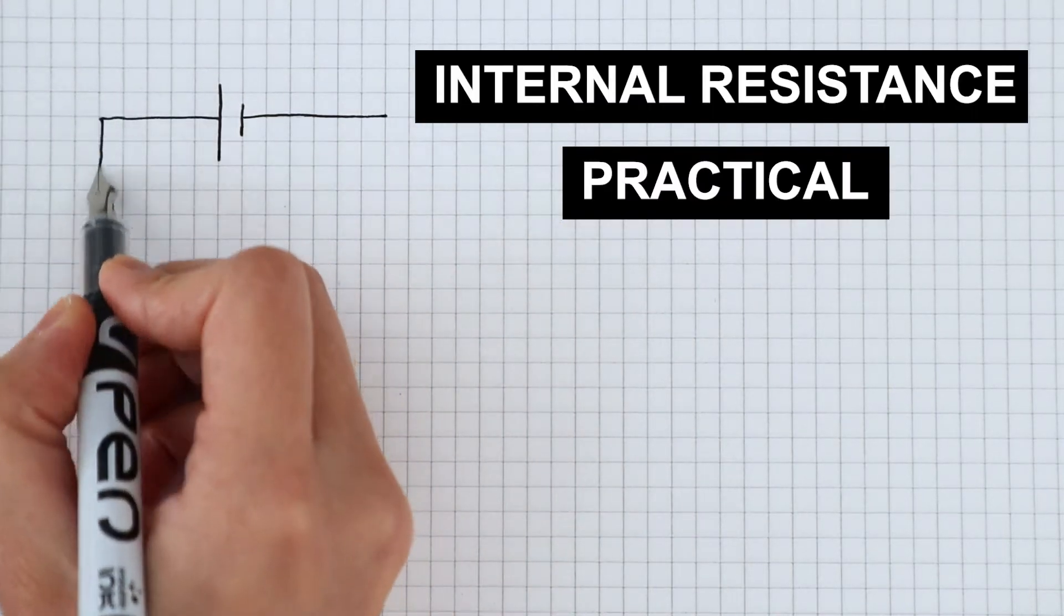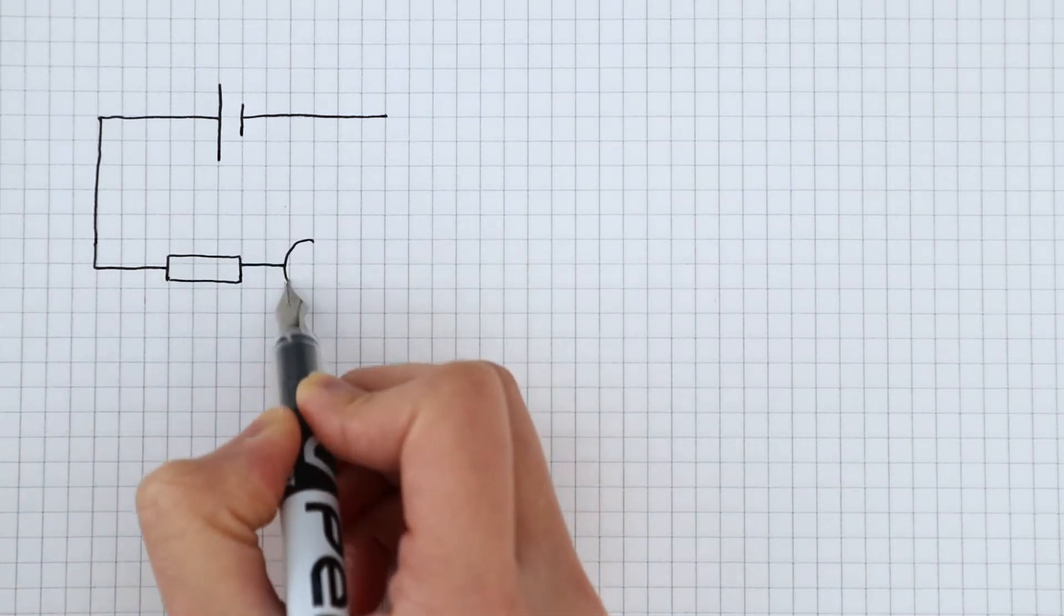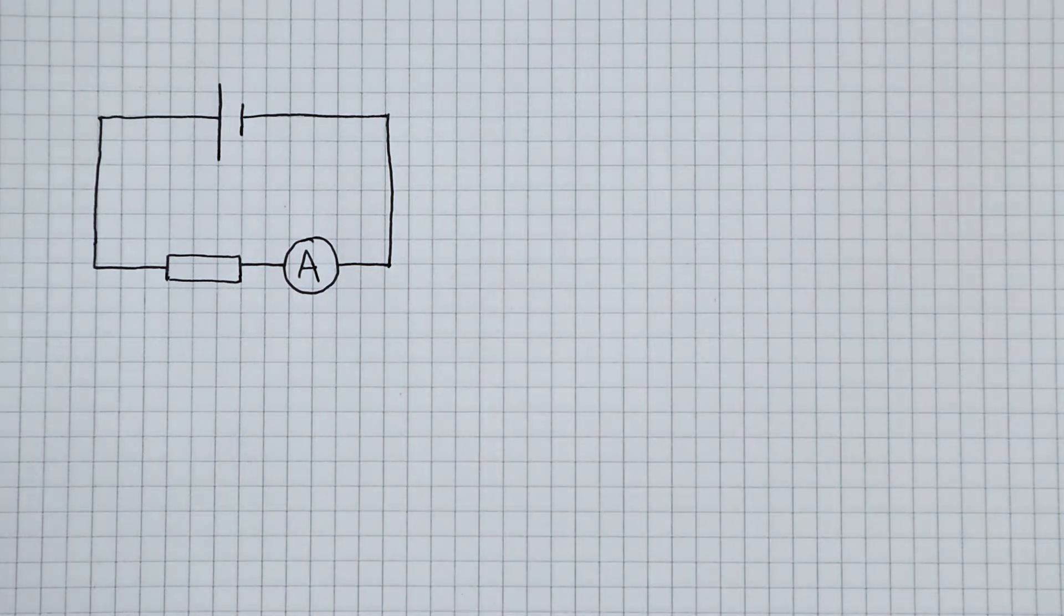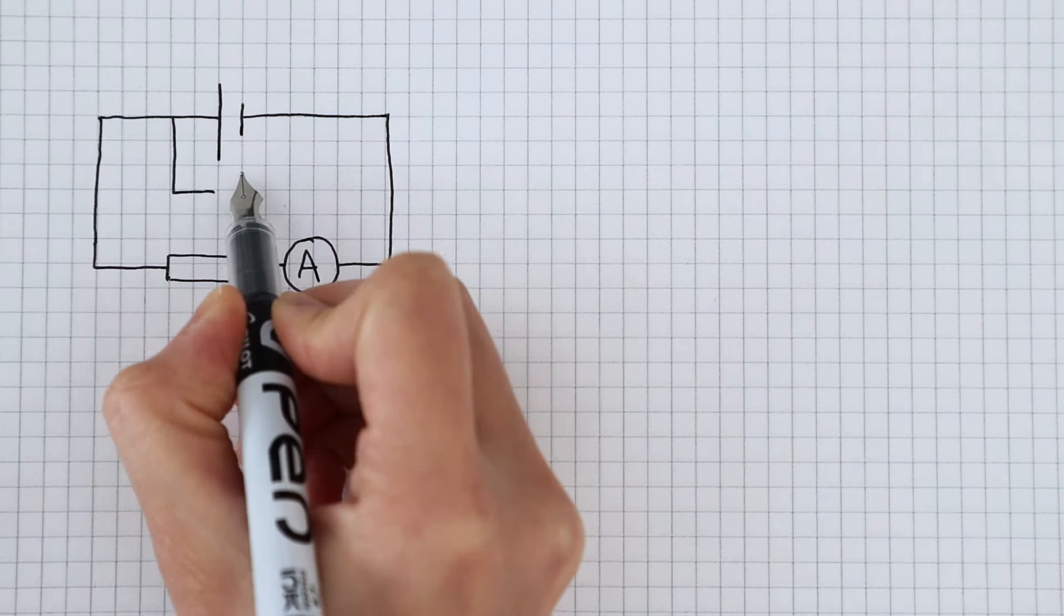In an experiment to find the internal resistance of a cell, we need to set up a circuit like this. We have a cell in series with a resistor and an ammeter. The voltmeter goes in parallel around the terminals of the cell.